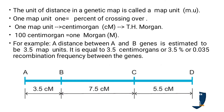The unit of distance in genetic mapping is called the map unit (M.U.). One map unit is equal to 1% crossing over. One map unit can also be written as 1 centiMorgan (cM) — capital CM — where 'cM' stands for centiMorgan, not centimeter. This unit is named in honor of Morgan, since the concept was given by Morgan's student Sturtevant.